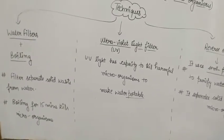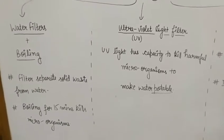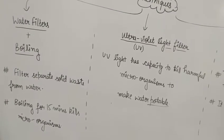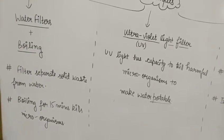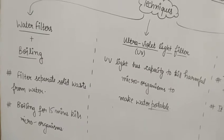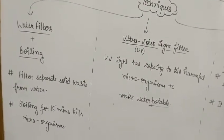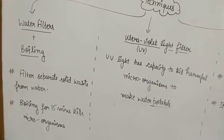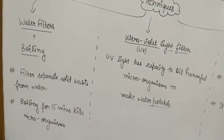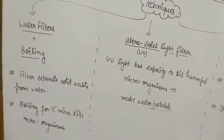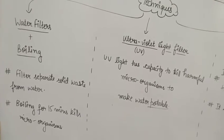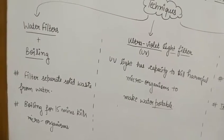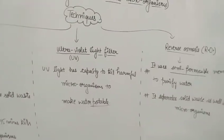The first technique is water filter plus boiling. In this technique, a ceramic water filter is used to separate solid waste. However, there may still be harmful microorganisms in that filtered water, so to ensure they are killed, the water should be boiled for 15 minutes so that all harmful microorganisms are destroyed.